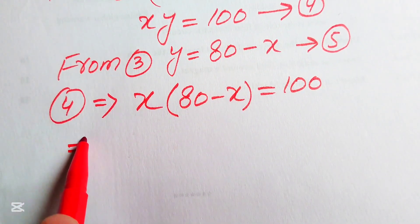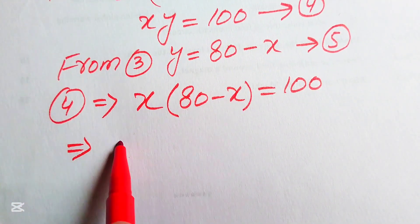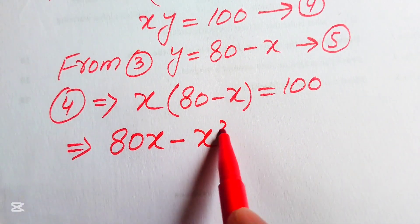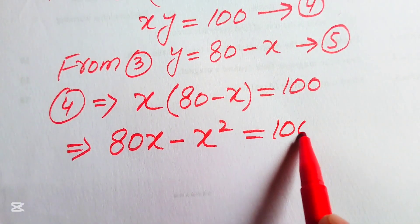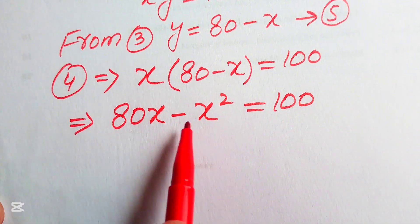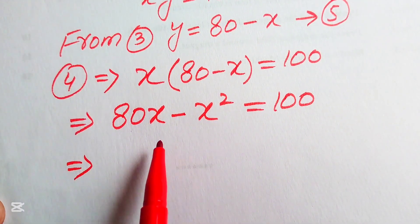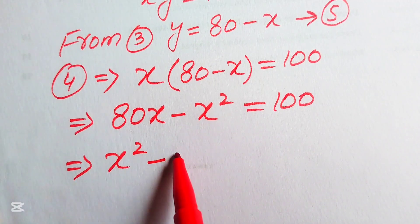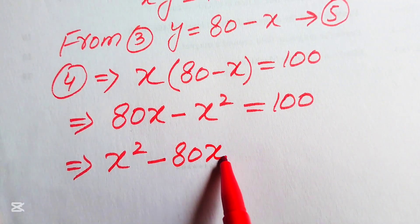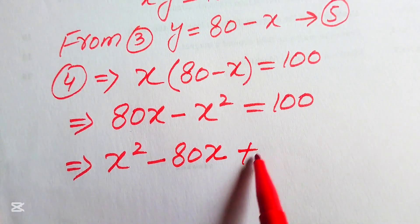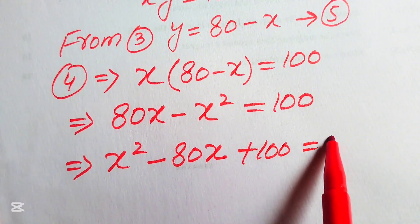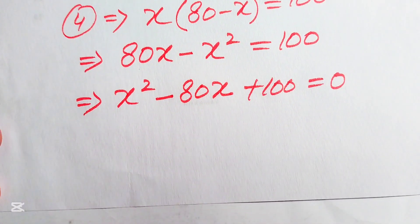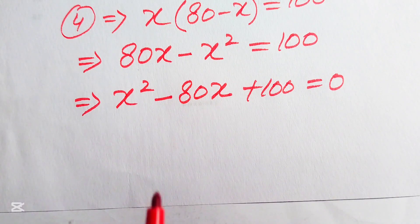We multiply x into both values to get 80x minus x squared equals 100. We move these terms to the right-hand side: minus x squared becomes plus x squared, plus 80x becomes minus 80x, giving us x squared minus 80x plus 100 equals 0. This equation is quadratic in x.